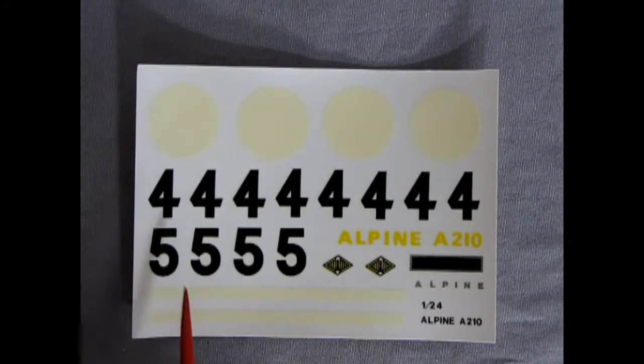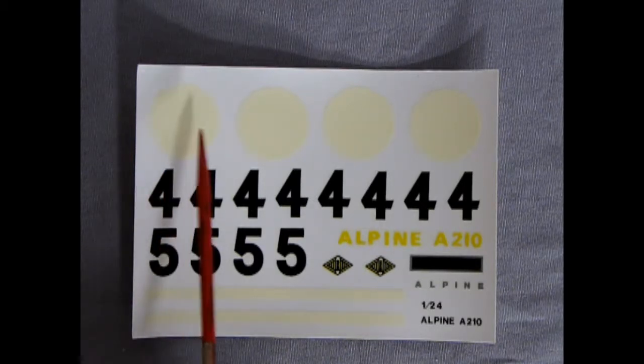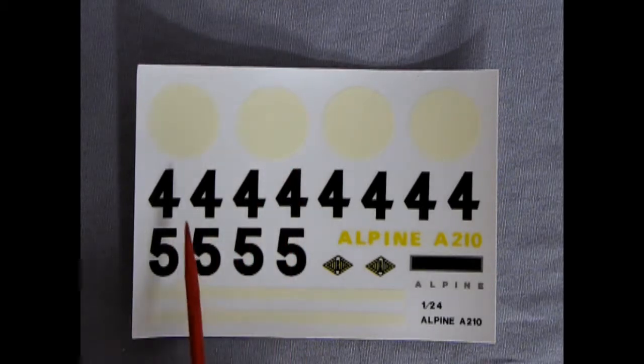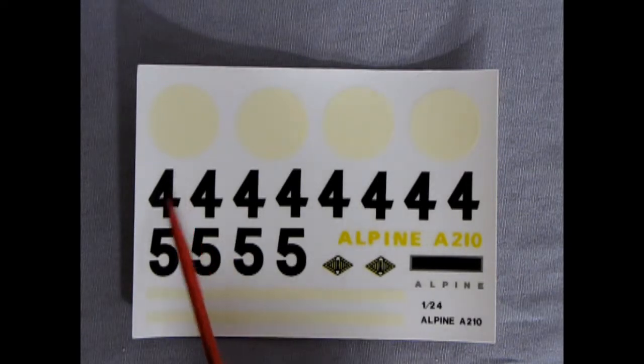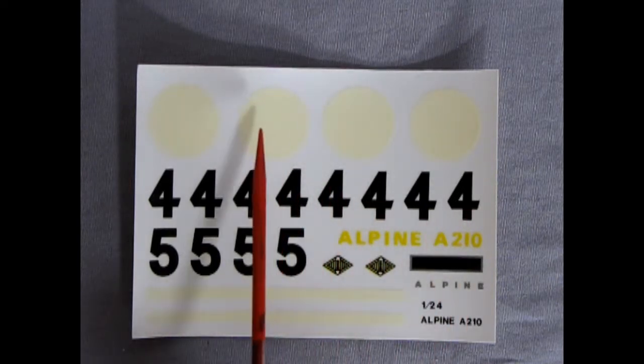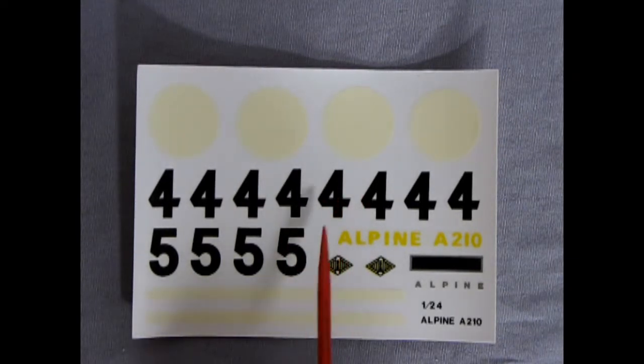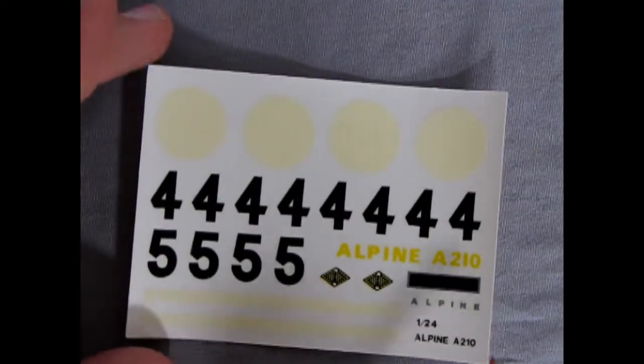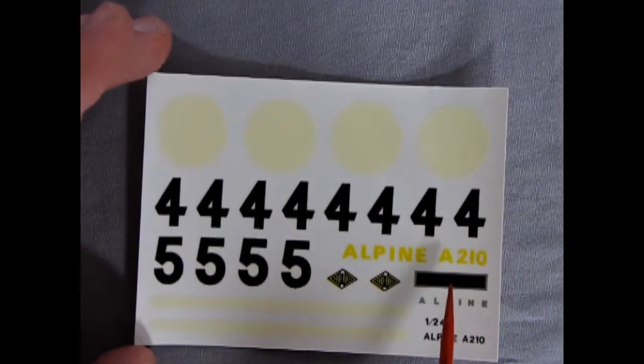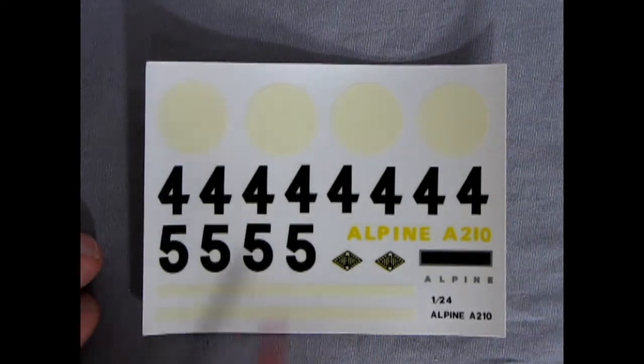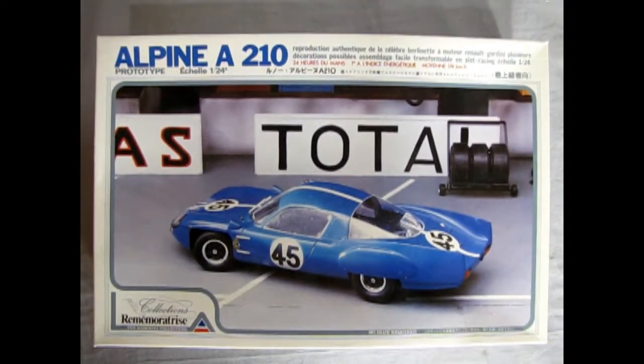Last but not least, we have our decal sheet. Here they give you the white circle. On mine now it's gone a little off-white, more like a very light beige. You can make car number 45 by putting a 4 there and a 5 there, or you can do car 44. You can actually make a car 54, but I don't know if they had a car 54. There's some interesting Alpine decals. Here's a French logo for sponsorship, and we've got some white pinstripes on here for the body. That concludes our look at our Alpine A210 by Union Model Company from Japan.